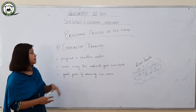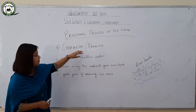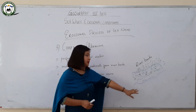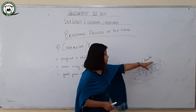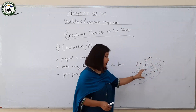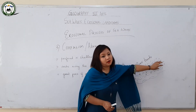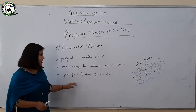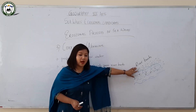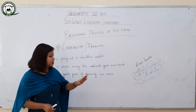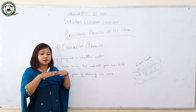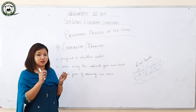The third erosional process is corrasion or abrasion, profoundly found in shallow water. As seen in the diagram, materials deposited over river banks are washed away to the sea by advancing sea waves with great force. These materials brought to the sea come into contact with each other, creating friction and breaking down into several pieces.